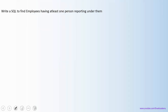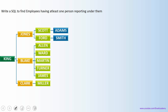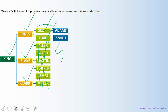Now let us see a few more examples of correlated subqueries. Here is a query: write a query to find the employees having at least one person reporting under them. Looking at the employee records, Scott has one reporting person, Ford has one, John has two, Blake has five, and Clark has one — so we should get King, John, Blake, Clark, Scott, and Ford — ideally five or six records as output. Let us see how to write this query with and without using a correlated subquery.